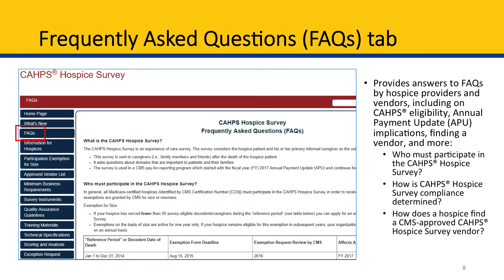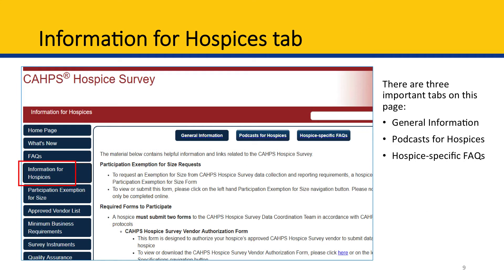The Frequently Asked Questions, or FAQs, tab is next. The FAQs tab provides answers to frequently asked questions by hospice providers and vendors. Specific examples of covered questions include: Who must participate in the CAHPS Hospice Survey? How is CAHPS Hospice Survey compliance determined? And how does a hospice find a CMS-approved CAHPS Hospice Survey vendor?